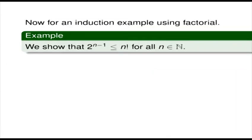Now let's do another example of induction — an induction example using factorial. We show that 2 to the power n minus 1 is less than or equal to n factorial for all n in the natural numbers.